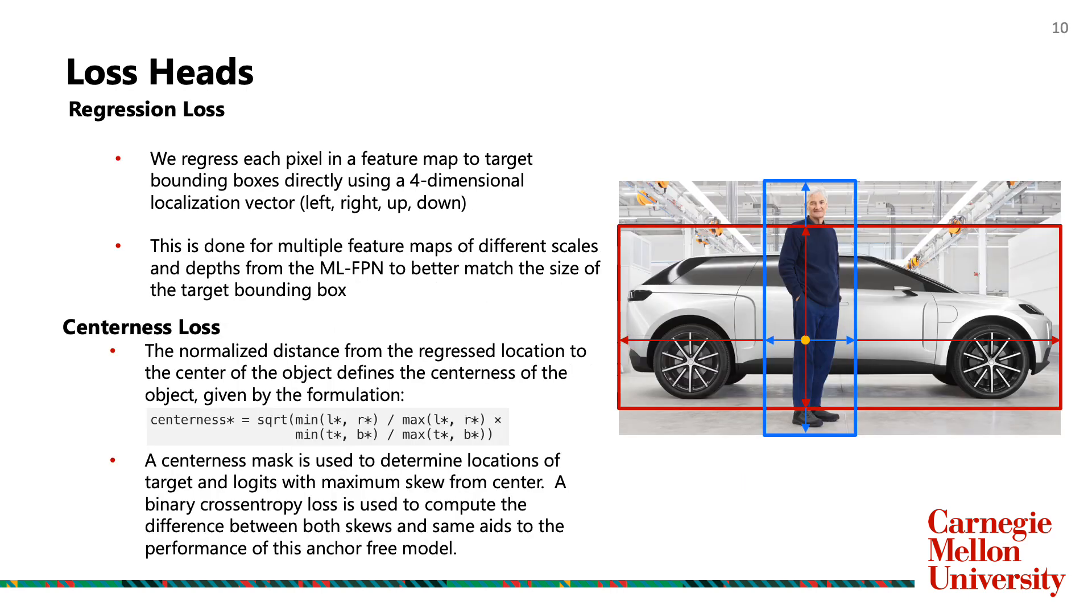Coming to the localization loss, we regress each pixel in a feature map to target bounding boxes directly by computing the generalized IOU loss over a 4D localization vector.